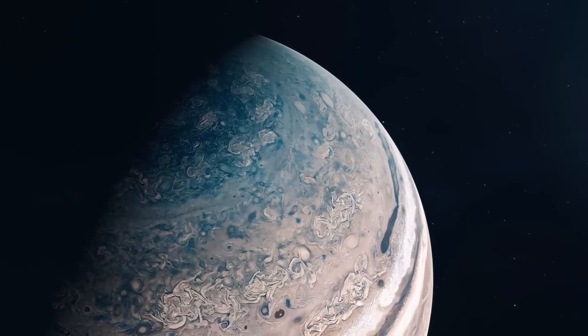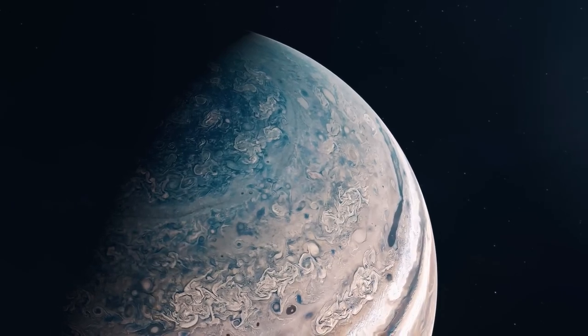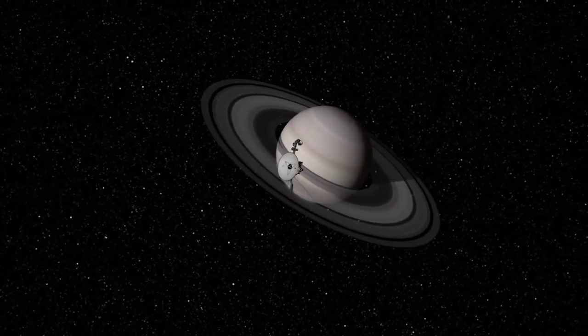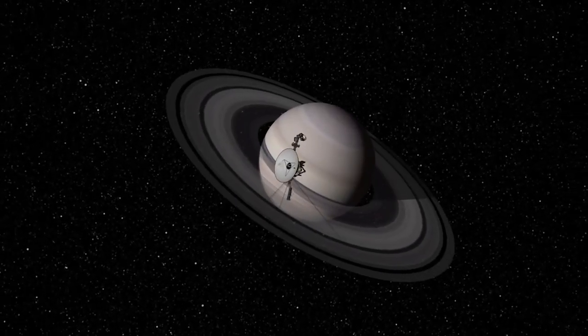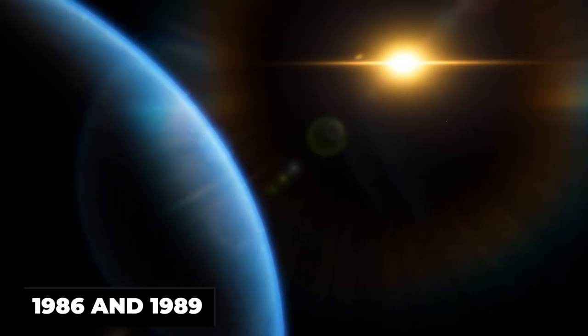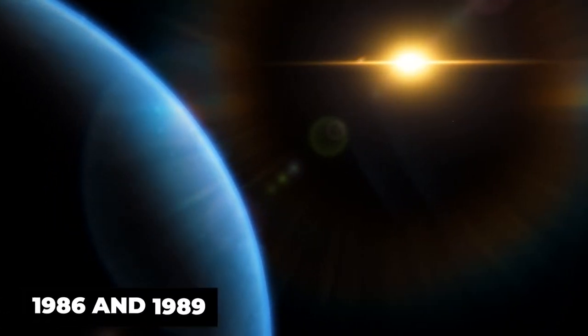The Voyager missions were originally created to investigate Jupiter and Saturn. The studies of those planets were completed by both missions, and subsequently, in 1986 and 1989, Voyager 2 made the first-ever up-close studies of Uranus and Neptune.